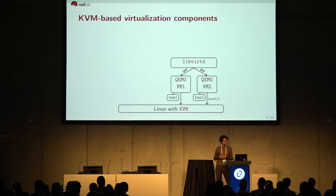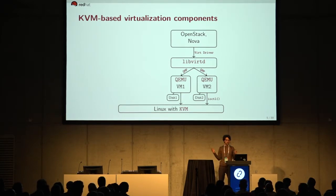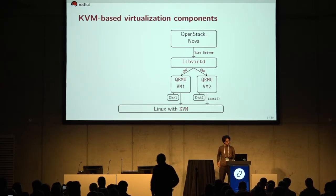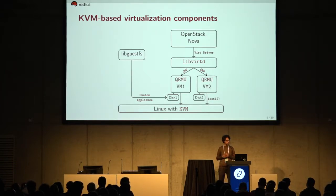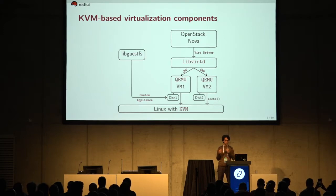Libvirt interacts with QEMU via a protocol called QMP — the QEMU Monitor Protocol — which is a JSON RPC-based mechanism. On top of that is OpenStack Nova, which has its own virtualization drivers for KVM, Xen, and others. Nova interacts with libvirt to launch virtual machines on your compute nodes. There are also external tools like libguestfs, which provide utilities to examine disk images. Libguestfs has safety controls so no two processes can write to the same disk image.